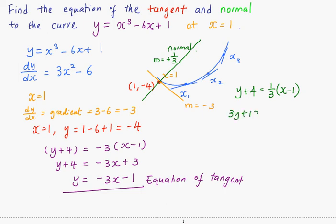So I get 3y + 12 = x - 1, which gives 3y = x - 13. This is the equation of the normal.